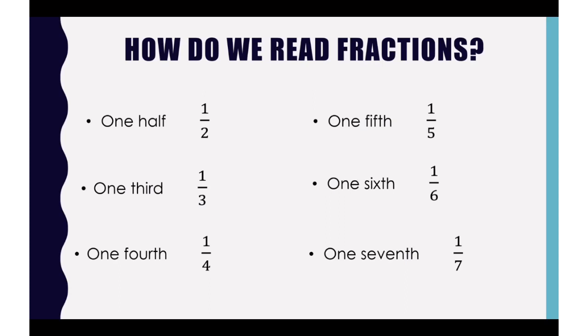We have 1 over 2, and the correct way to read it is 1 half, or sometimes we say a half. 1 over 3 would be 1 third, 1 over 4 would be 1 fourth, 1 over 5 would be 1 fifth, 1 over 6 would be 1 sixth, and 1 over 7 would be 1 seventh. Now, this will continue until we get to even a hundred.